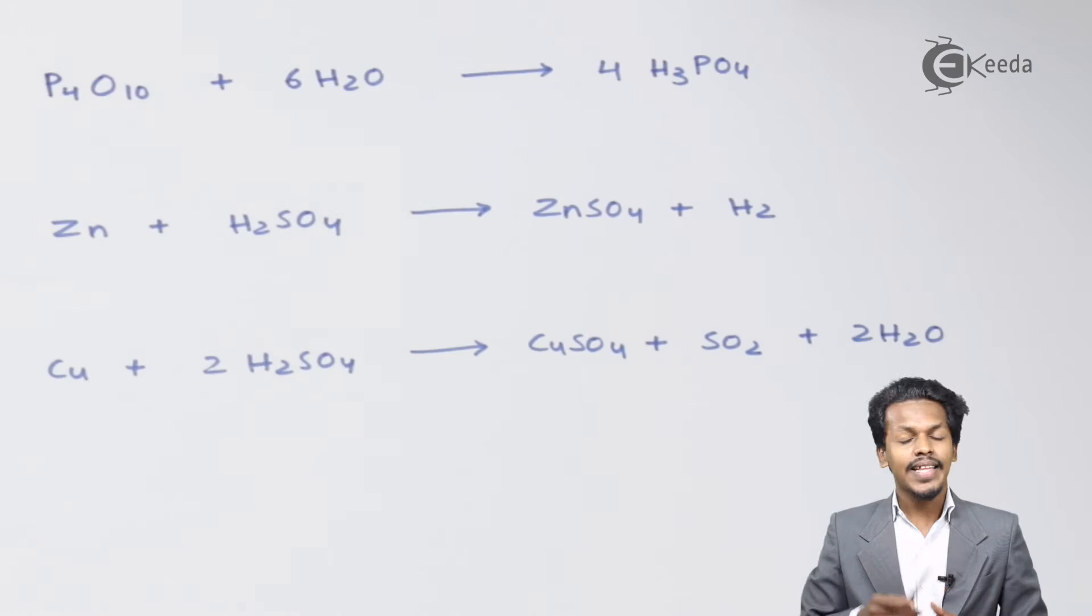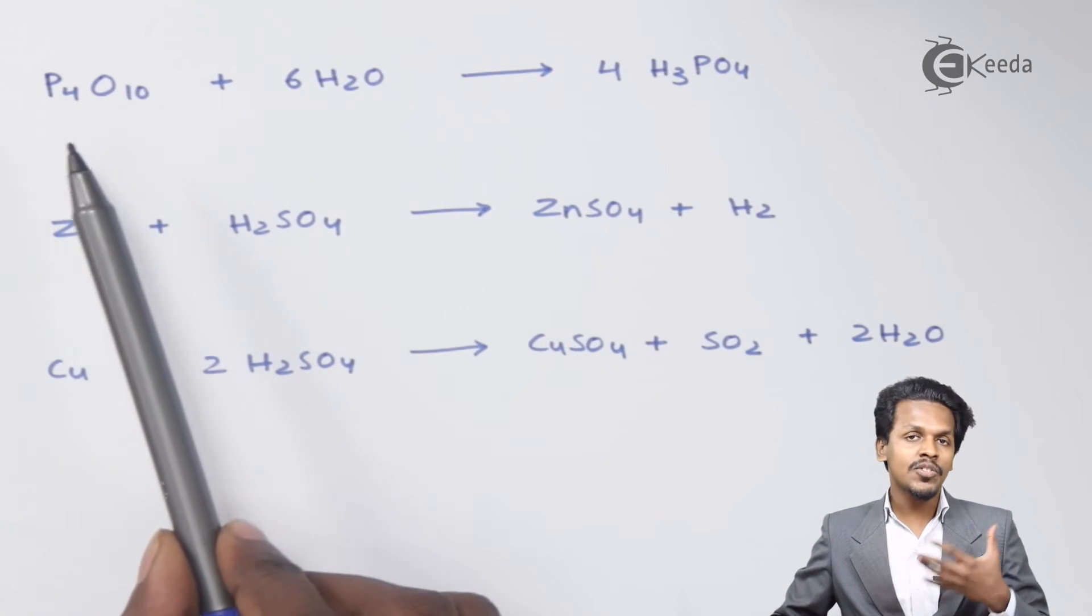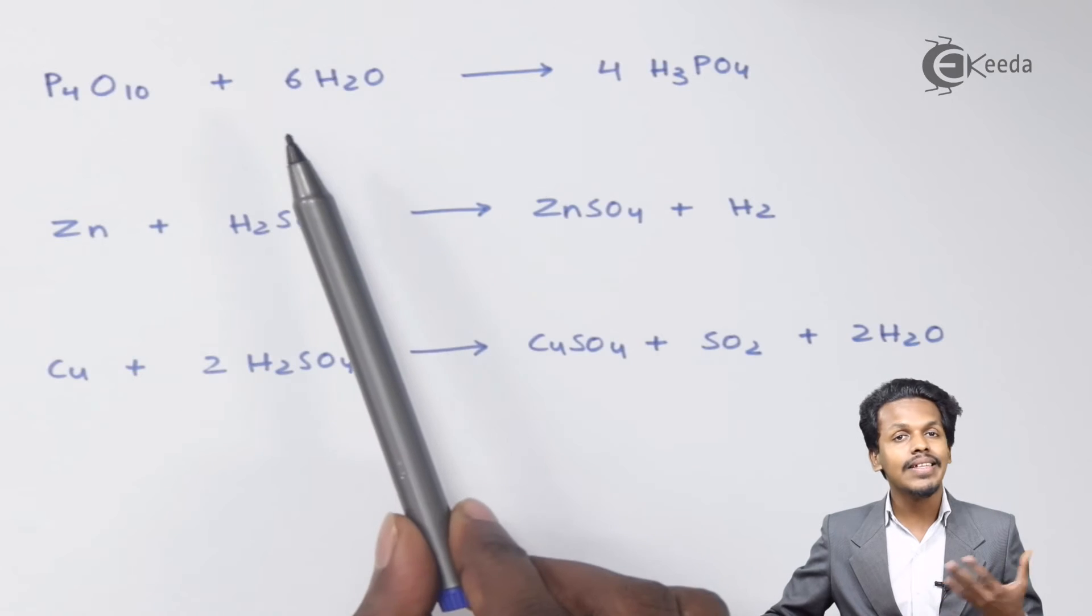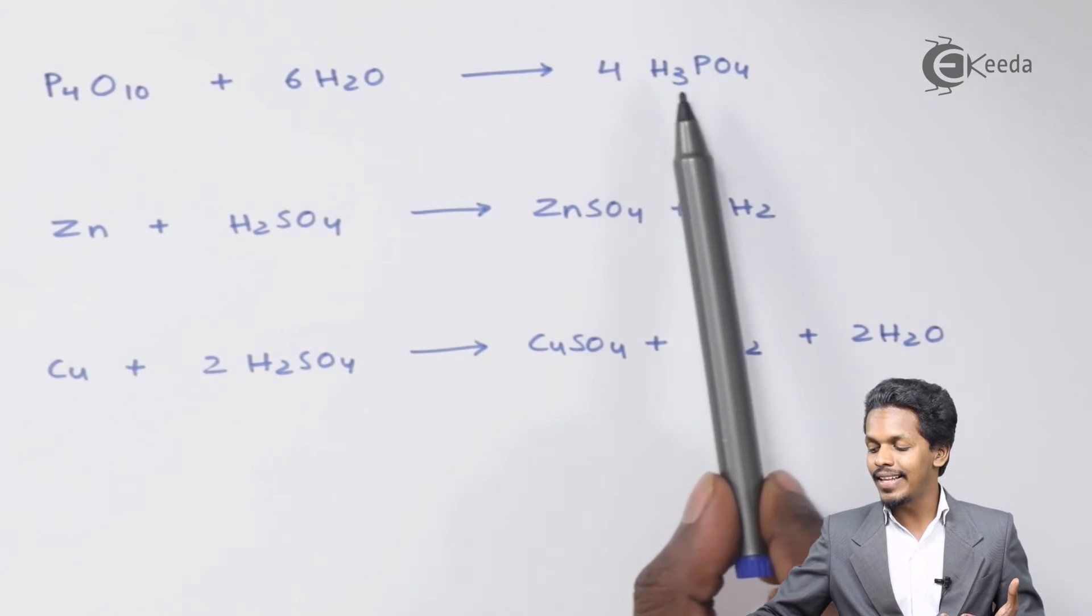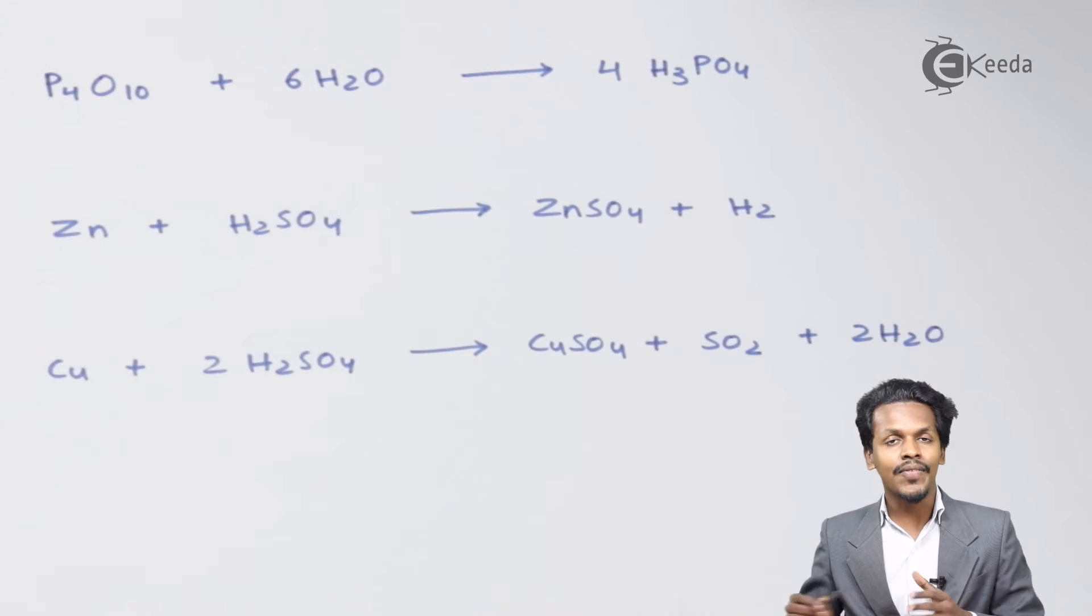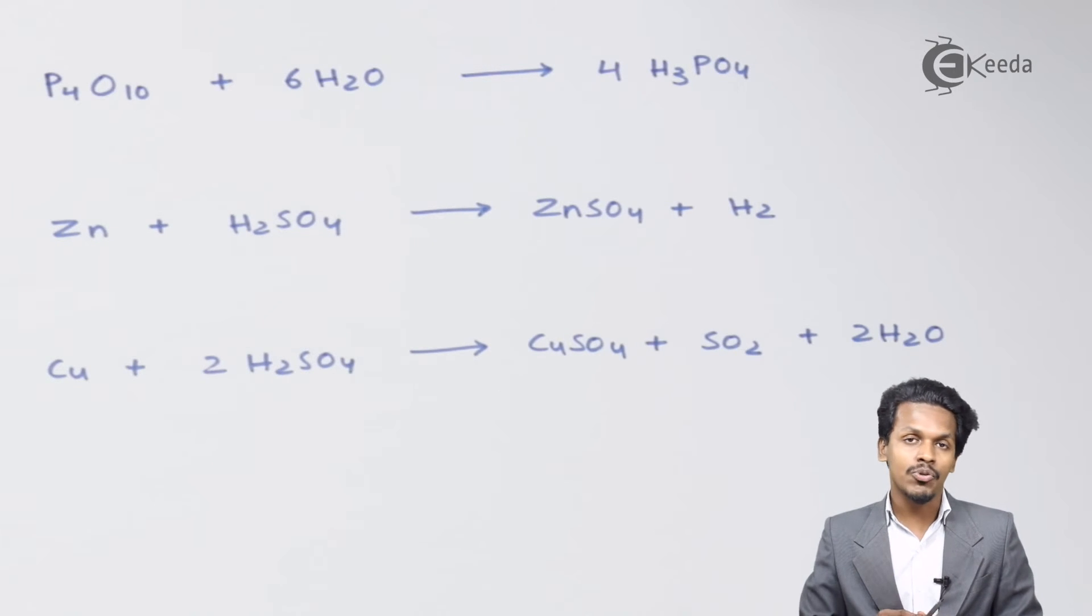Talking about the next reactions, P4O10 that has been produced in the previous reaction, if that is treated with 36 moles of H2O, we will get H3PO4, known as phosphoric acid. This shows that even different acids can be prepared by using H2SO4.